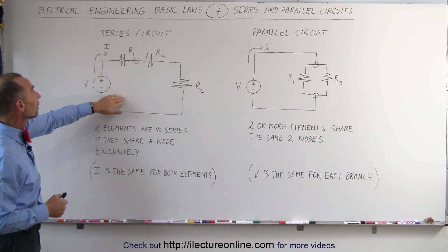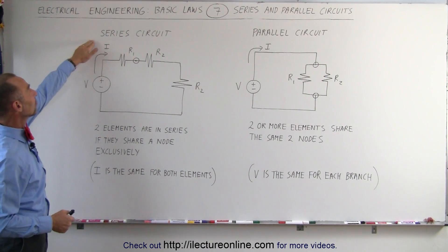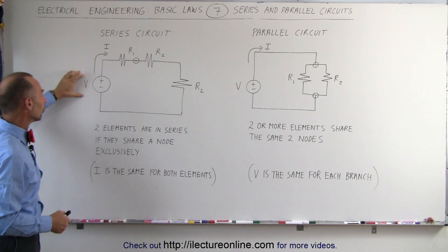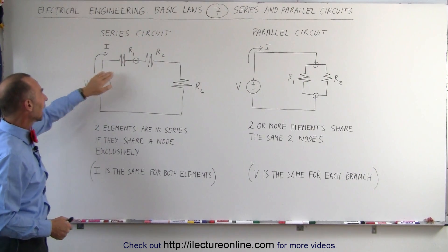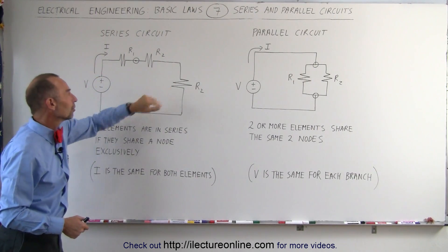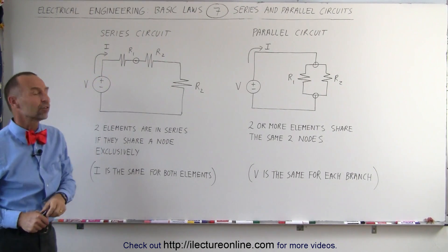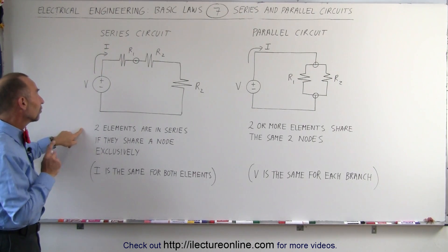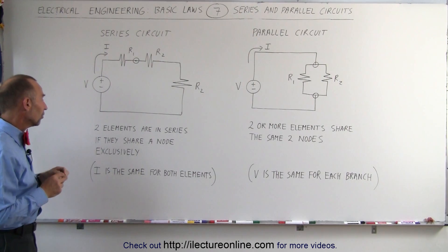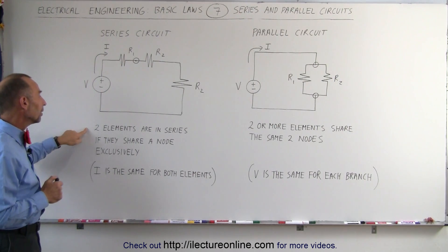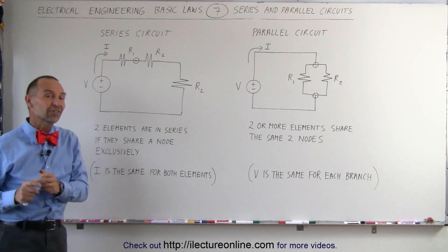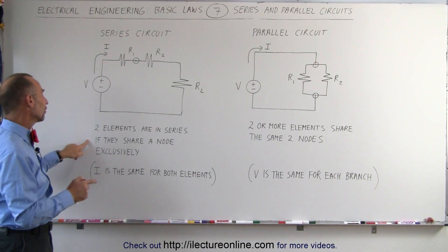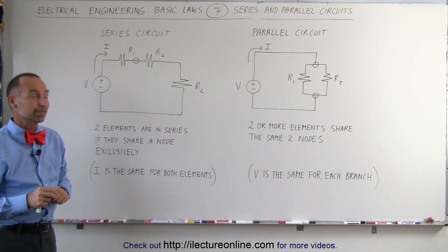The first circuit here is what we call a series circuit. It has one element called the voltage source and three more elements, each resistors. The definition of a series circuit is such that two elements are considered to be in series if they share a node exclusively.